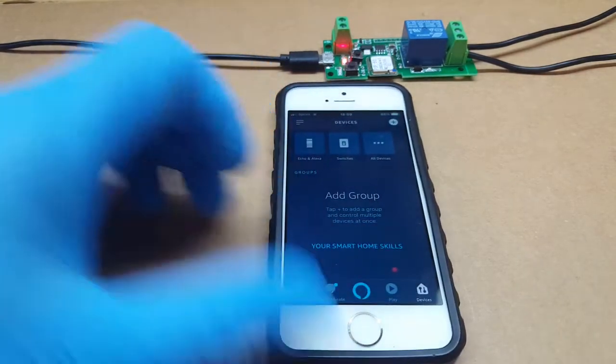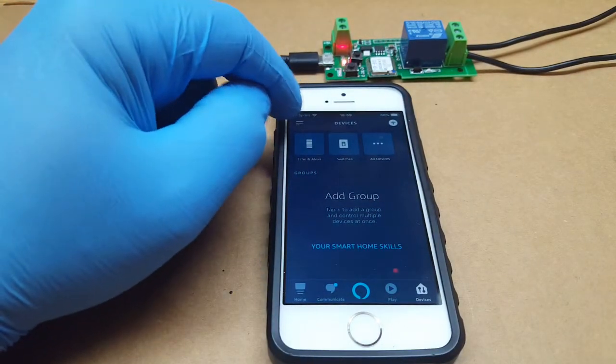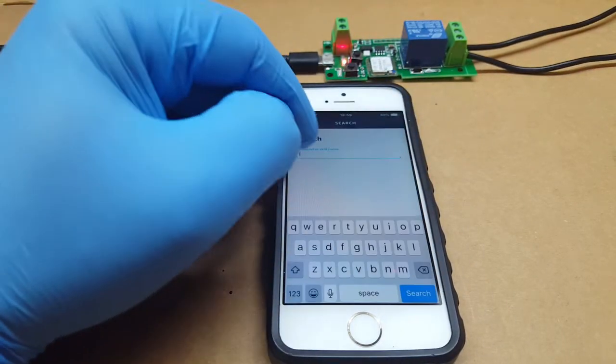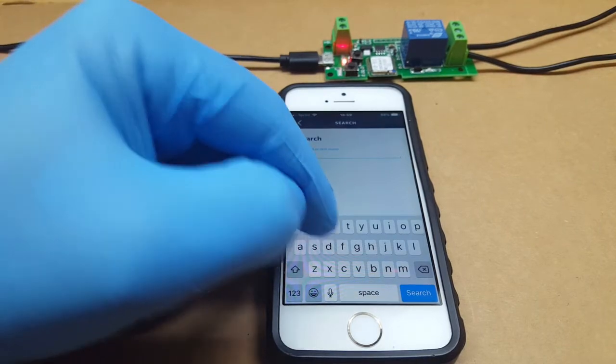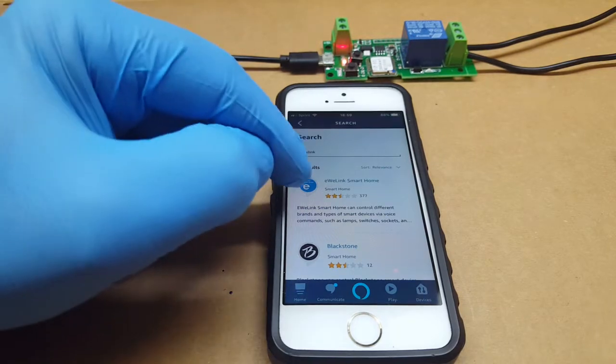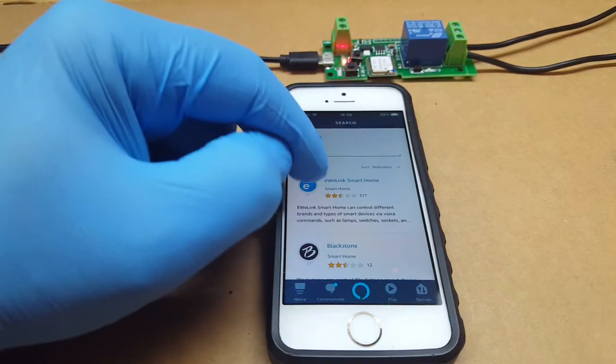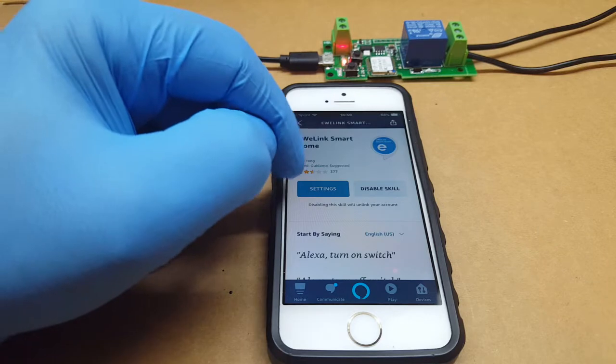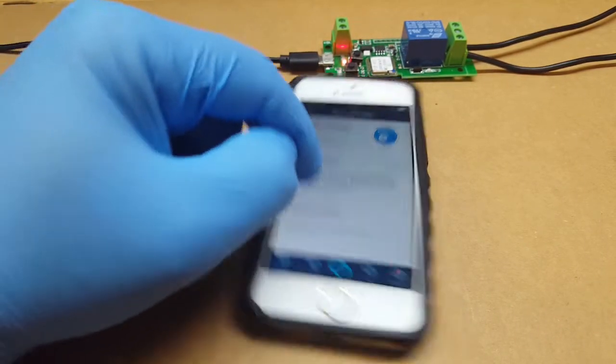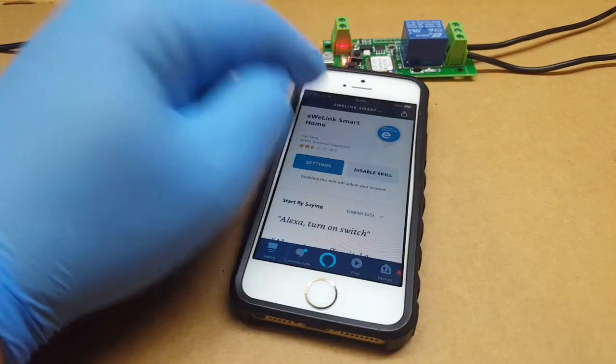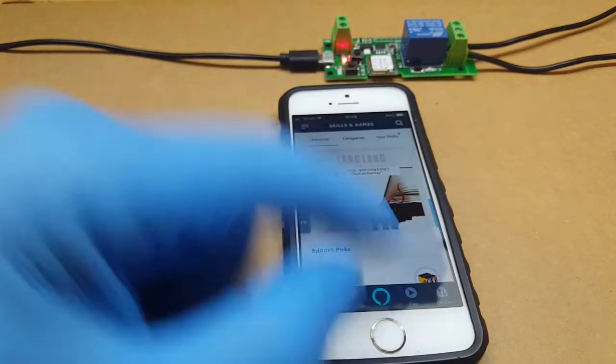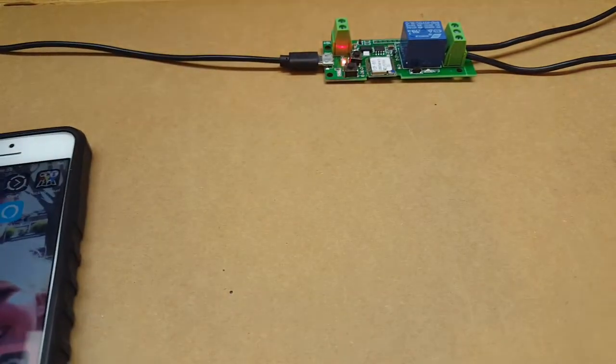Or we can go through - if we go under your Amazon Alexa app and go to Skills, you can download eWeLink right there. Just click on that and set it up.